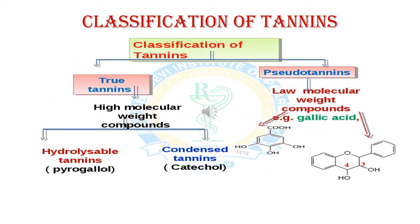Now we will discuss the classification of tannins. Tannins can be classified into two types: first is true tannin and second is pseudo tannin. True tannins have high molecular weight and they follow the gold beater skin test; they can be further classified into hydrolyzable tannins and condensed tannins. Pseudo tannins are low molecular weight compounds, for example gallic acid and ellagic acid, and they do not follow the gold beater skin test.